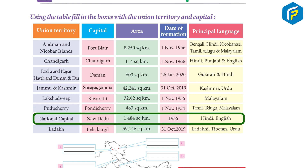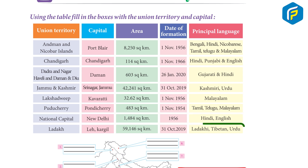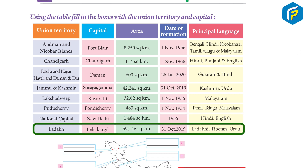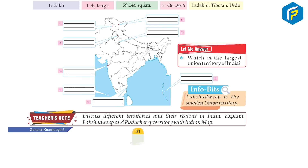National Capital Territory of Delhi: capital New Delhi, area 1,484 square kilometers, formed 1956, languages Hindi and English. Ladakh: capitals Leh and Kargil, area 59,146 square kilometers, formed 31 October 2019, languages Ladakhi, Tibetan, and Urdu.